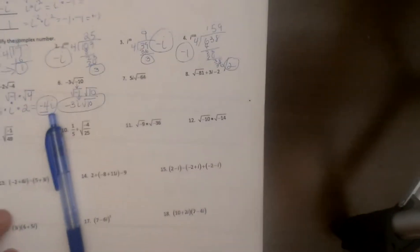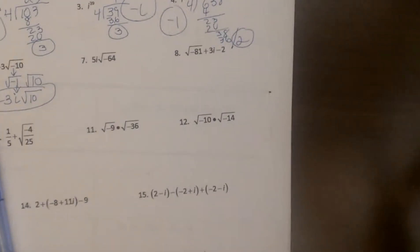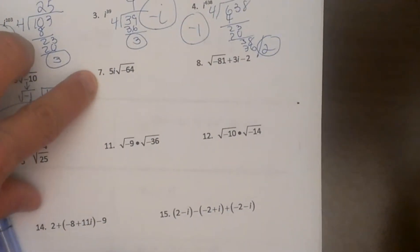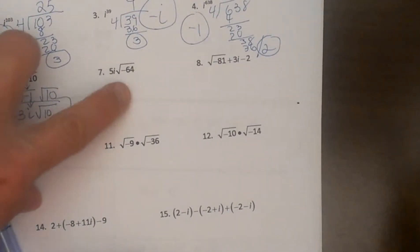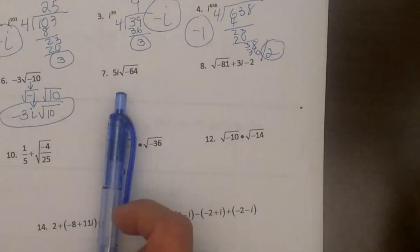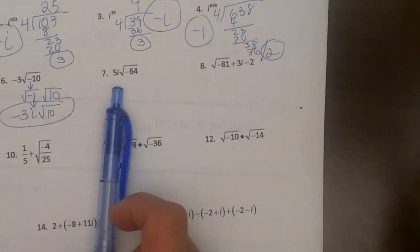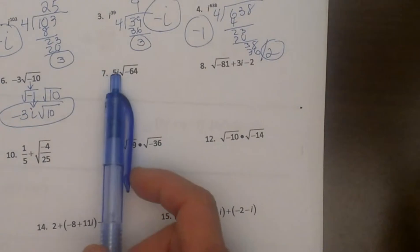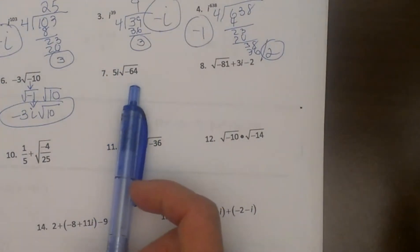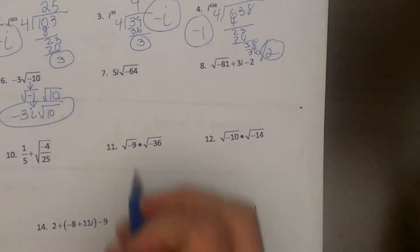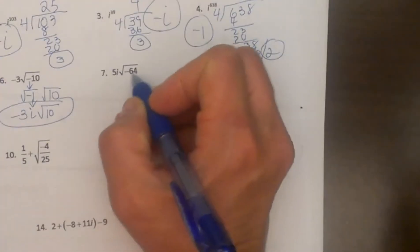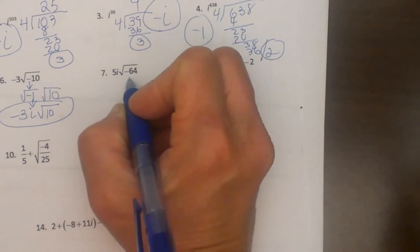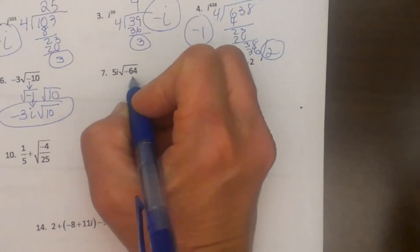Hey, welcome back to MooMath. Today we are going to look at, zoom in here, on how to simplify radicals with negative values. We have looked at the pattern of i, and if you haven't viewed that you may need to go back and look at the pattern of i. But now we are going to take that concept and simplify a negative under a radical. So I have got 5i times the square root of negative 64.